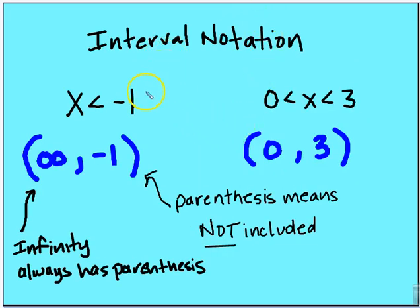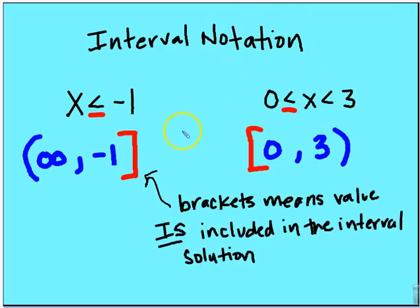Let's talk about interval notation, parentheses, and brackets. Parentheses mean the value is not included — for example, x less than negative 1 uses parentheses. Infinity always has parentheses since it's never included. When x is between 0 and 3, not inclusive, we use parentheses on both ends. If the value is included — such as x less than or equal to negative 1 — we use a bracket. Similarly, x greater than or equal to 0 uses a bracket on the 0 side, but x less than 3 uses a parenthesis.